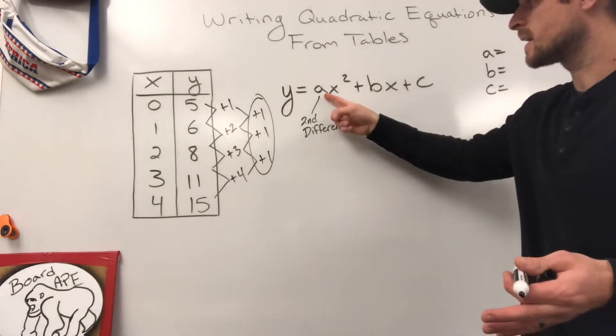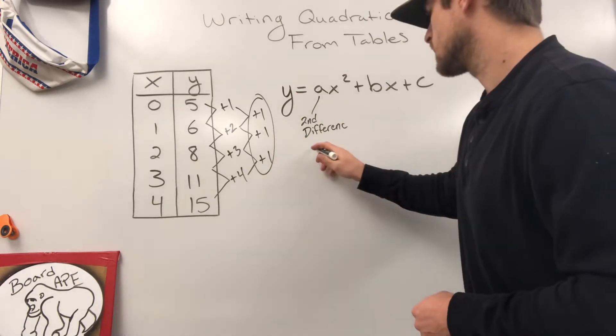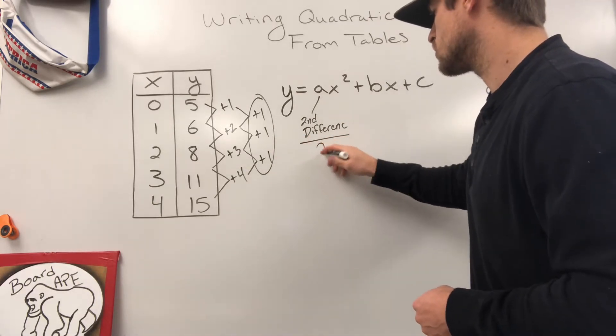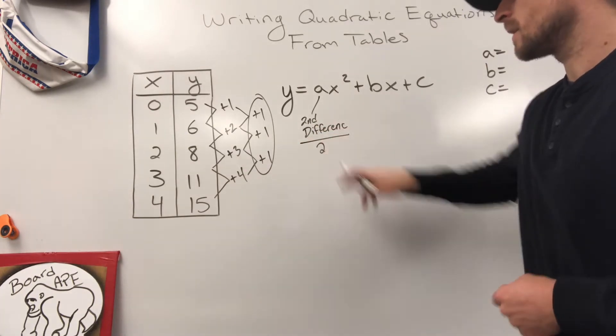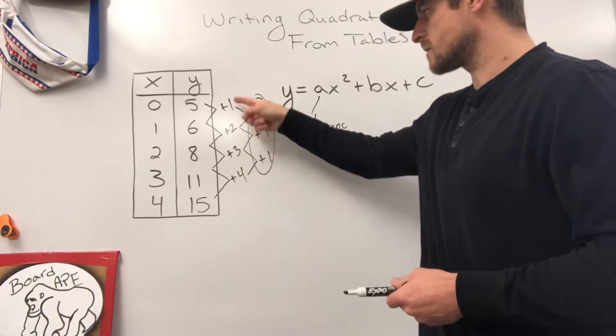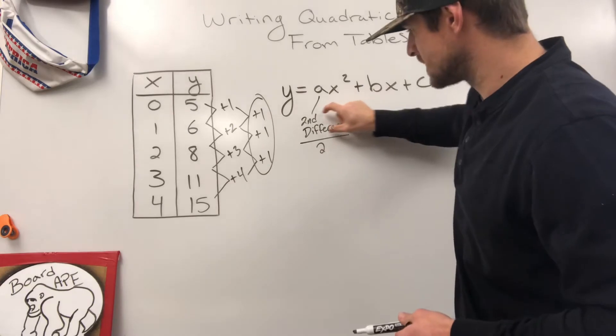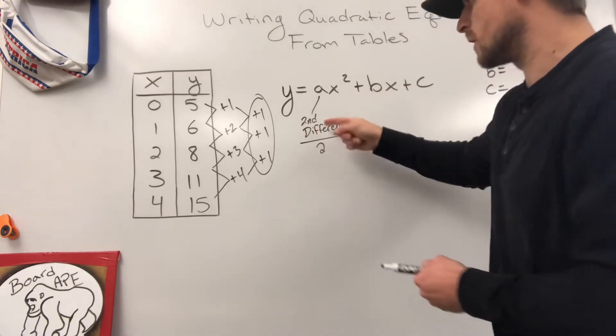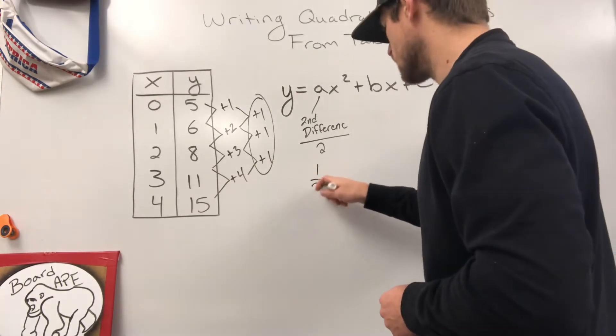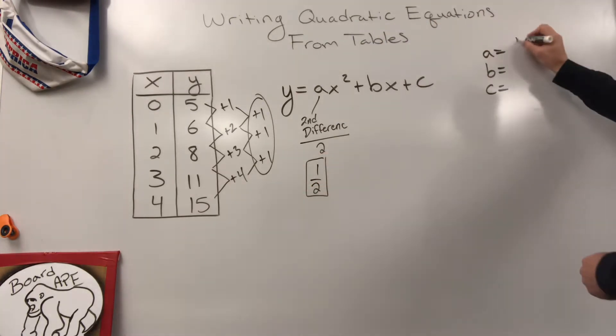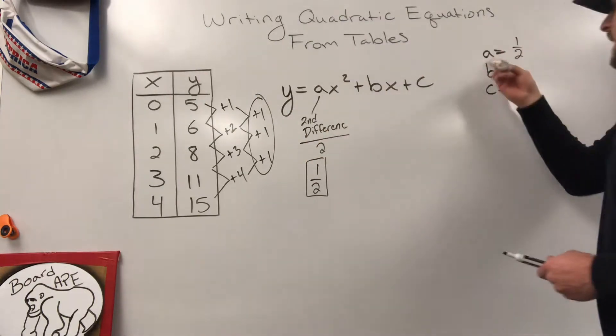So a comes from your second difference, one, divided by two. Second difference divided by two. So I went my first difference, one, two, three, four. Second difference, one, one, one. So I'm going to take one, that's my numerator, to one over two. So I now know that a is one over two. I'm going to put that over here so I can keep track of it. a is one half.